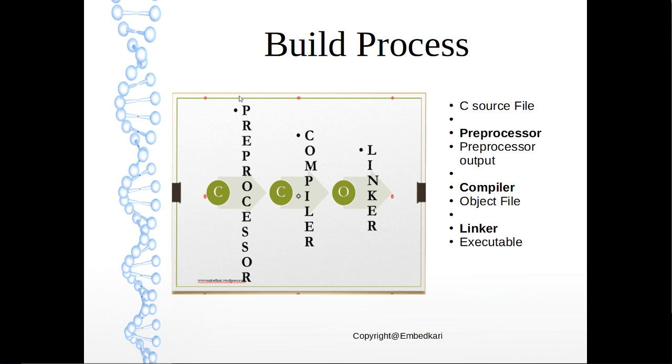That will pass through a preprocessor, and then it will become C after preprocessor, basically. And then the compiler will compile it and create the object file. Finally, the linker will link different object files and create the executable file. So preprocessor output is this, and then compiler output is the object file, and finally linker output is the executable file. This is the way it works.